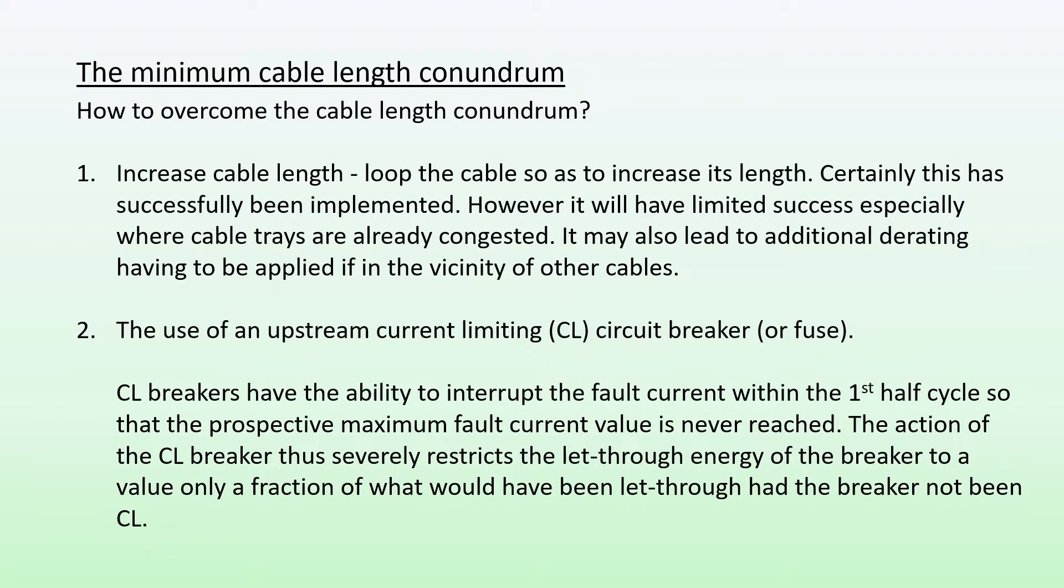The second option is the use of an upstream current limiting circuit breaker or fuse. Current limiting breakers have the ability to interrupt the fault current within the first half cycle so that the prospective maximum fault current value is never reached. The action of the current limiting breaker restricts the let-through energy of the breaker to a value only a fraction of what would have been the case had the breaker not been a current limiting one.